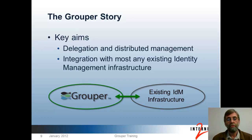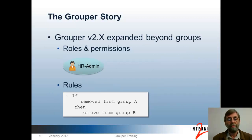Likewise, we wanted to minimize obstacles to adopting good access management practices by being able to integrate with just about anything already in place, enhancing and extending existing identity and access management at a given organization. In Grouper 2.x — version 2.0 was released in September 2011 — we completed a program of expanding Grouper's capabilities beyond group management to include roles and permissions.